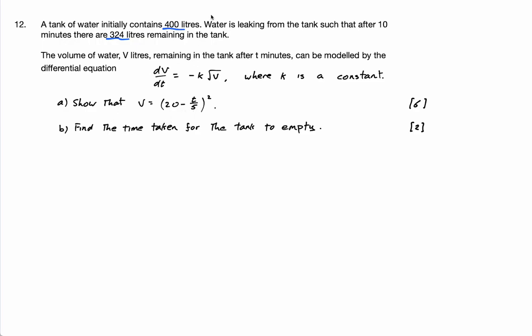And that's what we're going to do. So this is our initial condition. It says initially, that means when T is 0, V is 400. So that'll help us get K. And we have another condition after 10 minutes, there's 324 litres remaining in the tank. So that'll help us get C.